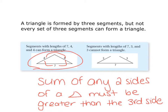For the second example with sides 3, 3, and 7: 3 plus 7 is obviously bigger than 3, both ways. But 3 plus 3 is 6, and 6 is not greater than 7. It can't even equal it — it has to be strictly greater. So this cannot form a triangle.